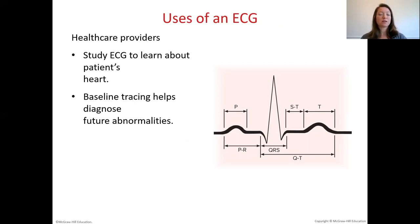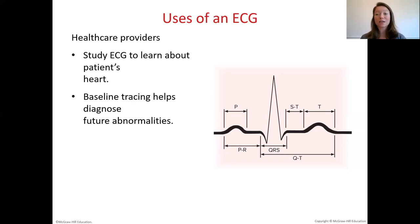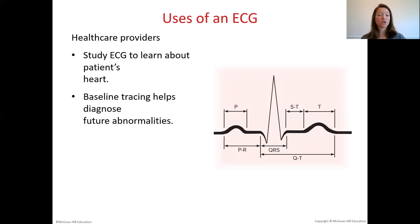ECG is basically a tracing of the heart's electrical conductivity. ECG tracings are used to determine a lot of things about the patient's heart. Healthcare providers look at these tracings to find abnormalities and to get a baseline for how the patient's heart is doing at that given time. If a change or problem arises later, they can look at the baseline tracing to see what has changed. It's recommended that adults 40 and older do an ECG annually as part of their yearly checkup.